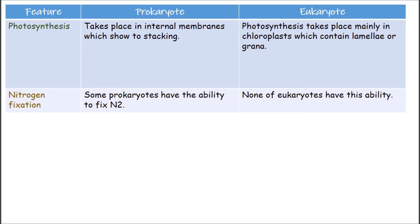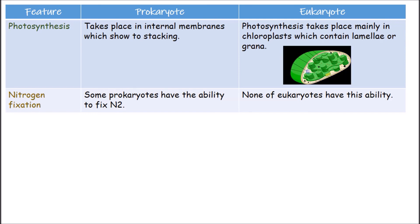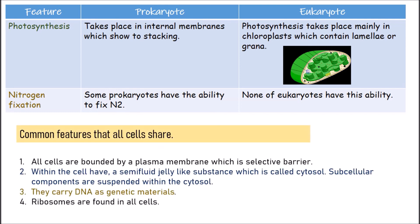Some prokaryotes have the ability to fix nitrogen; none of the eukaryotes have this ability. Certain basic features are shared by all cells: all cells are bounded by a plasma membrane, which is a selective barrier. Within the cell there is a semi-fluid jelly-like substance called cytosol, in which subcellular components are suspended. All cells carry DNA as genetic material, and ribosomes are found in all cells.